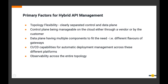Finally, you need to have observability across the entire topology. From a business perspective, the enterprise owning this API management deployment needs to see what's happening and how each API is behaving at the various data planes — how users are adapting to these APIs and so on. You need observability at all planes, and from an operational point of view as well.